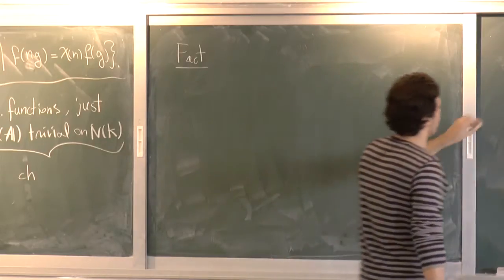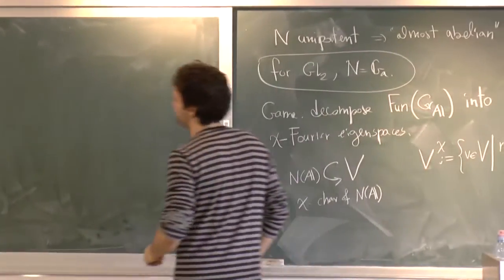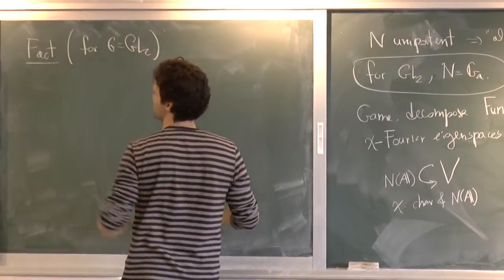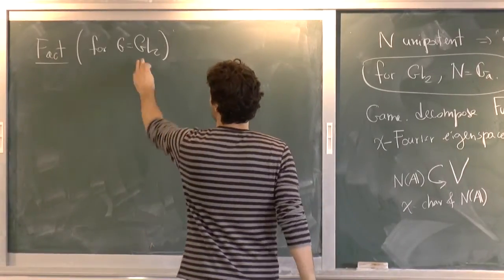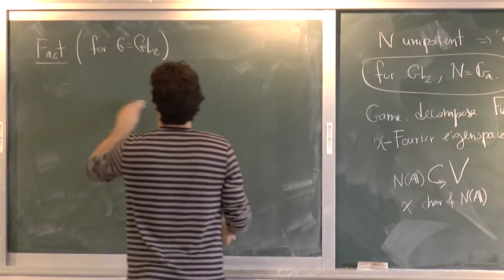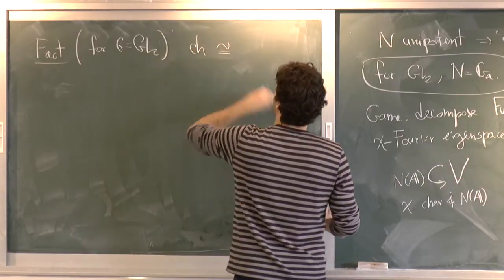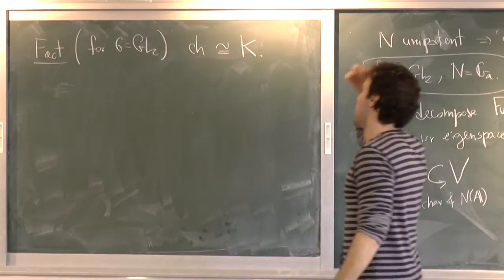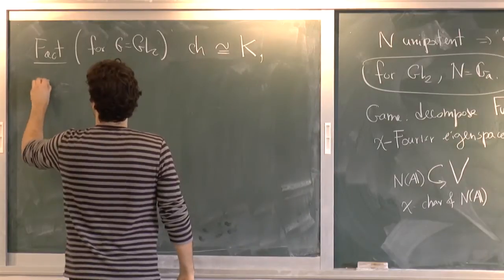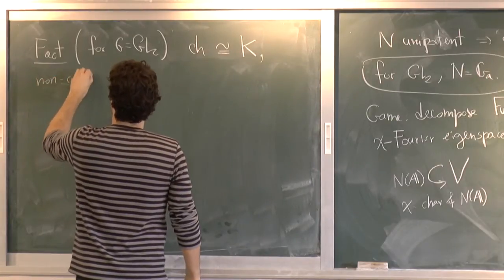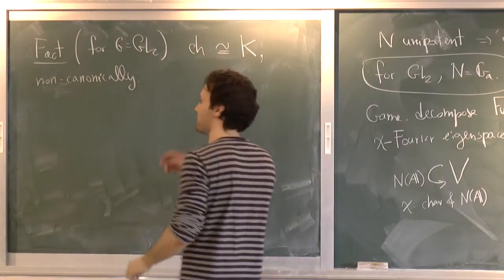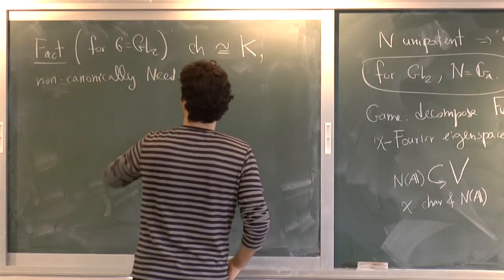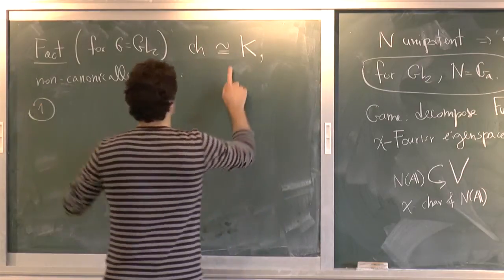Then state as a fact. So remember that I'm going to fix now GL2. So again, for G is equal to GL2, which I've done so far. I assume so far.